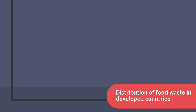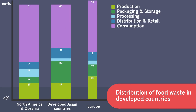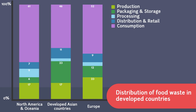This graph shows the distribution of food waste in developed countries. More than 50% of food waste takes place during the consumption phase, especially in Europe and North America. Therefore, we need to focus on food consumption in order to reduce post-harvest losses in developed countries.